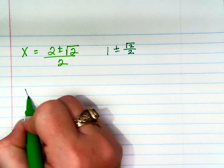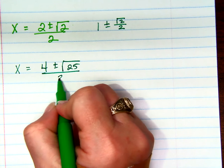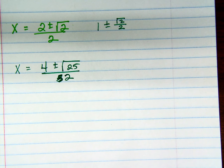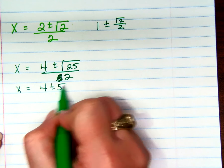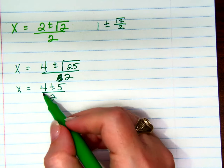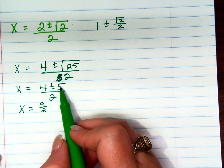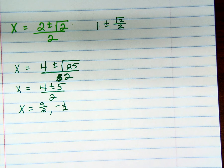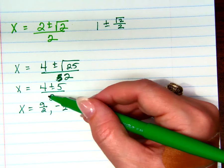What if you do all your work and get x equals 4 plus or minus the square root of 25, all over 2? You know the square root of 25 — it's 5. So you have 4 plus or minus 5, all over 2. What's 4 plus 5? That's 9 over 2. What's 4 minus 5? That's negative 1 over 2. Don't leave it at that earlier point — go one more step and actually figure each of them out.